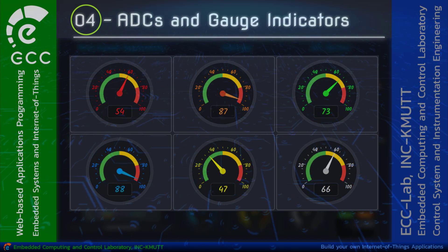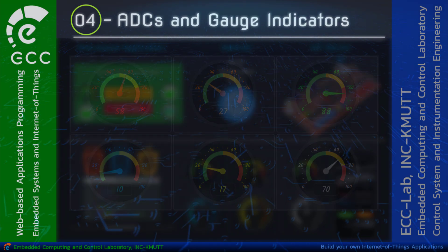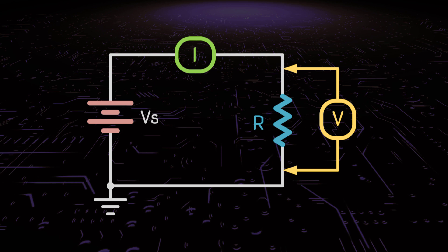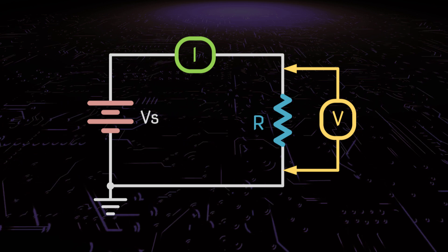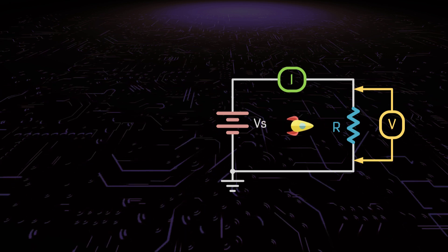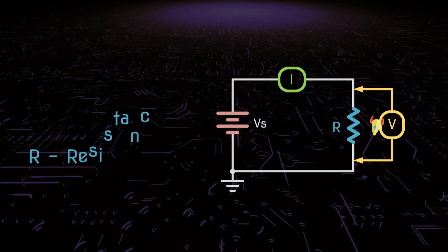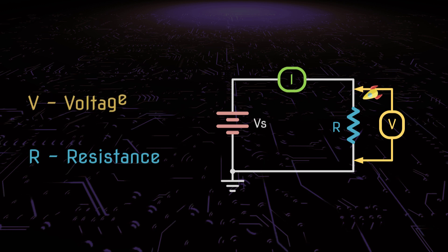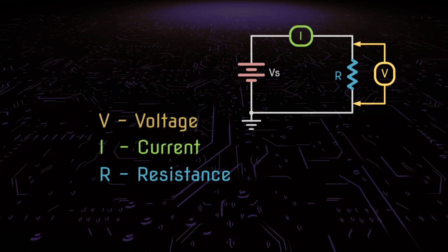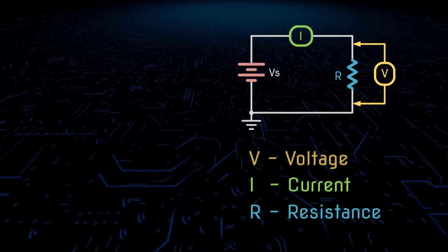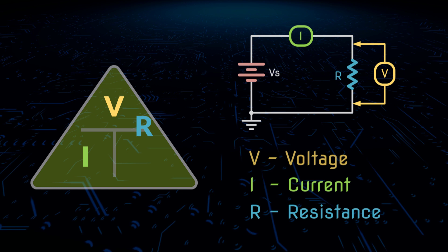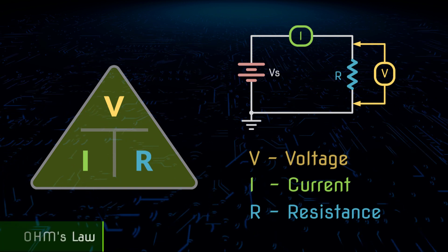Before we go into the programming section, let's take a look at the fundamentals of electronic devices and electronic circuits. In electrical and electronic circuits, there are three basic parameters. The first one is resistance, the second one is voltage, and the last one is current. As we already know from basic circuit analysis, these three main parameters in any circuit can be explained by Ohm's law.